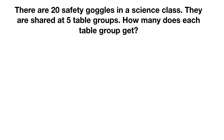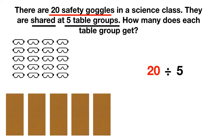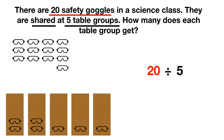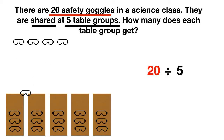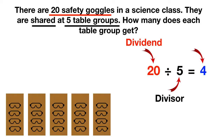Now it's time for you to practice on your own. There are 20 safety goggles in a science class. They're shared at five table groups. How many does each table group get? We can think about the problem with 20 safety goggles — in our number sentence we write 20. They're shared, which means split or divided between five table groups, so we write a five. If you split up the goggles, you can see each table will have four goggles. This 20 is called the dividend, the five is called the divisor, and the answer is called the quotient.